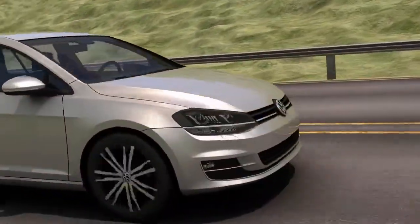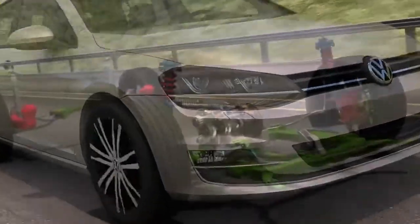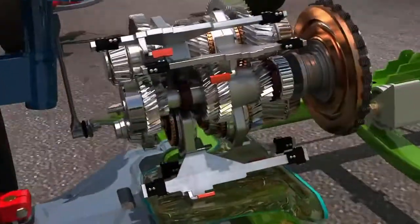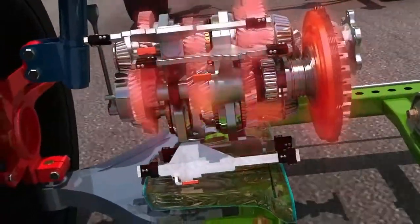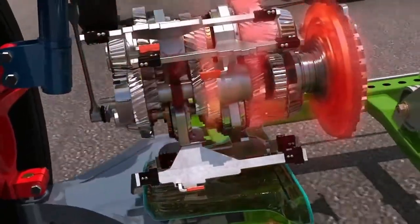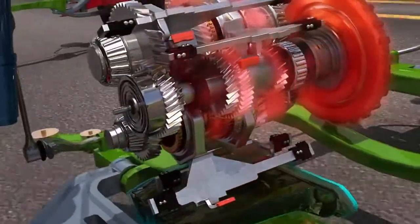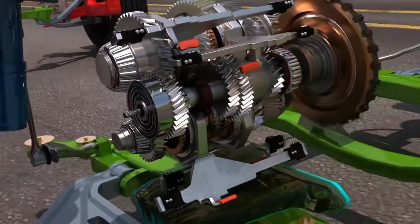If the DSG oil is dirty, it may damage other parts of the gearbox and affect performance. Dirty oil can also overheat the gearbox, which could cause the clutch to burn out, leading to poor gear selection, loss of power, and transmission failure.